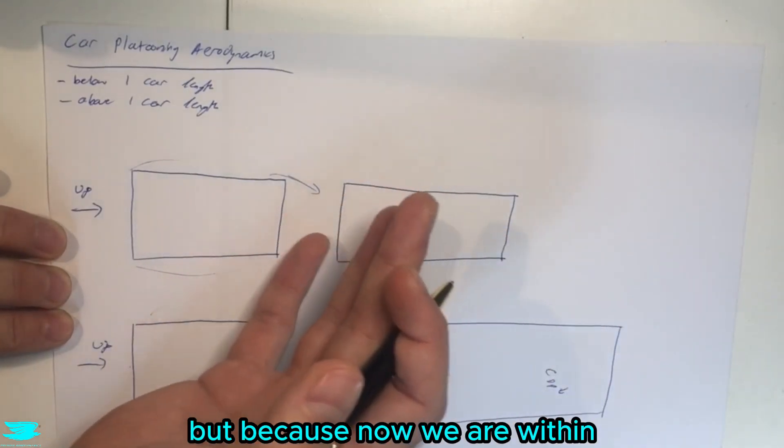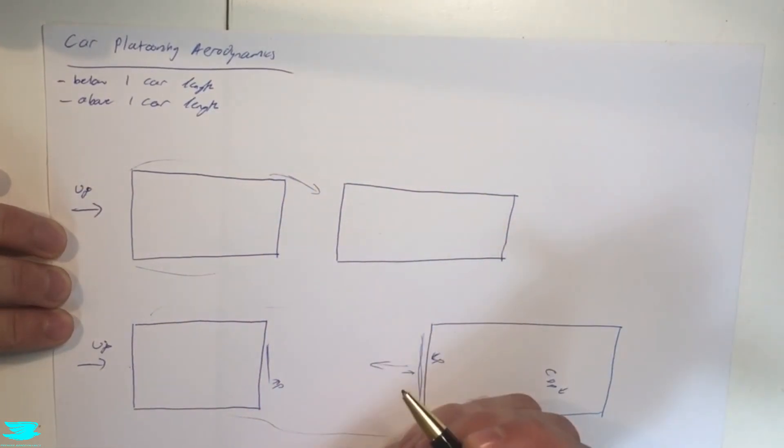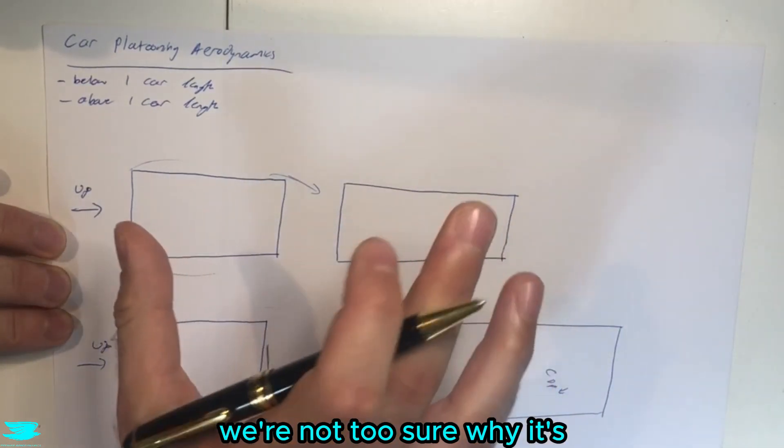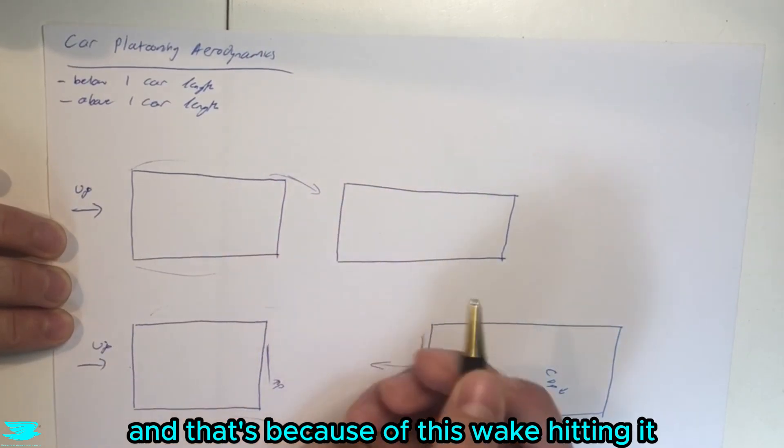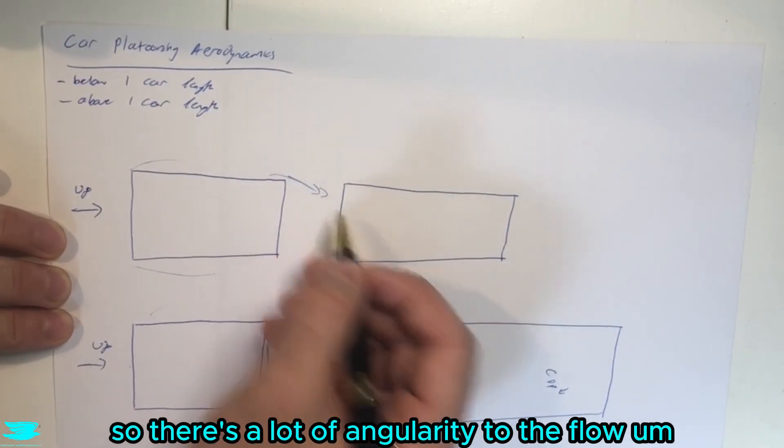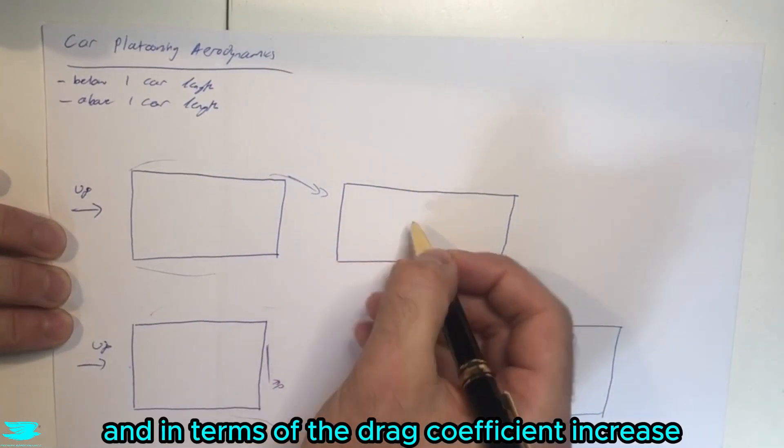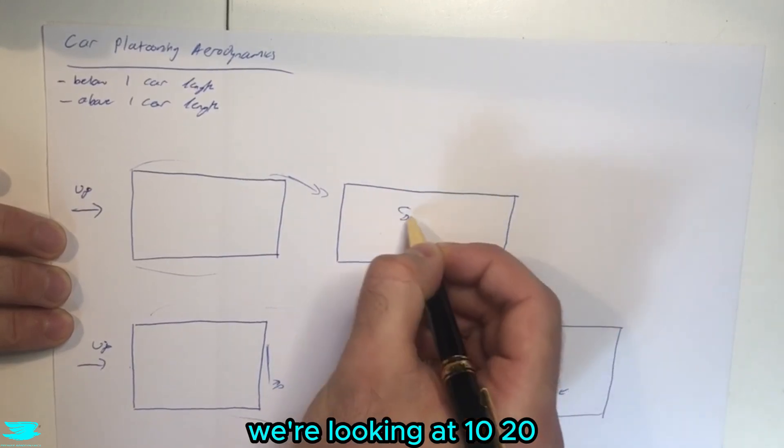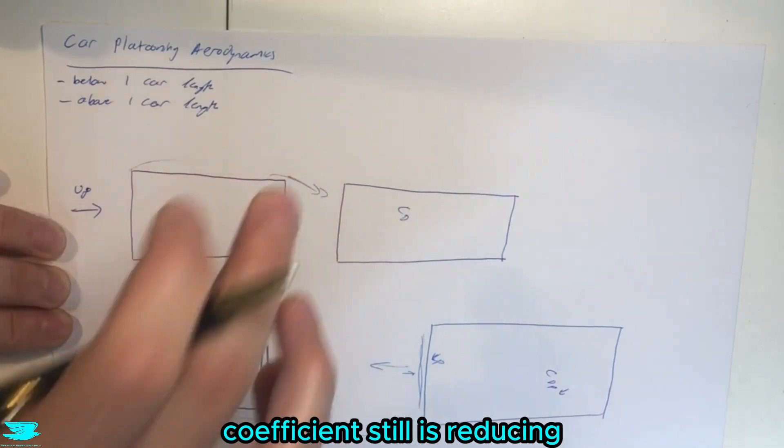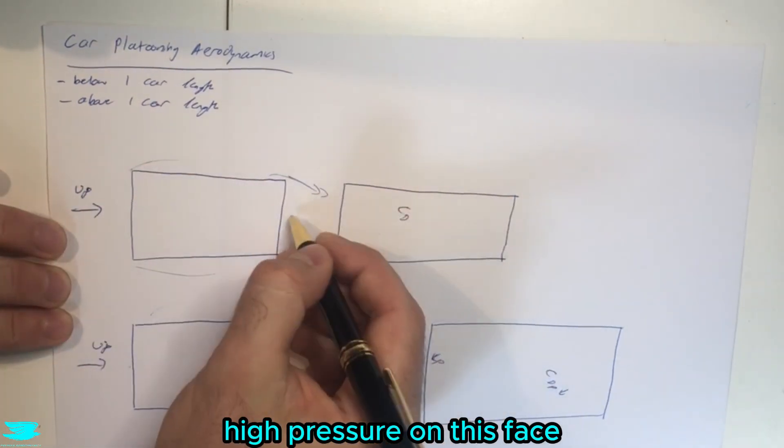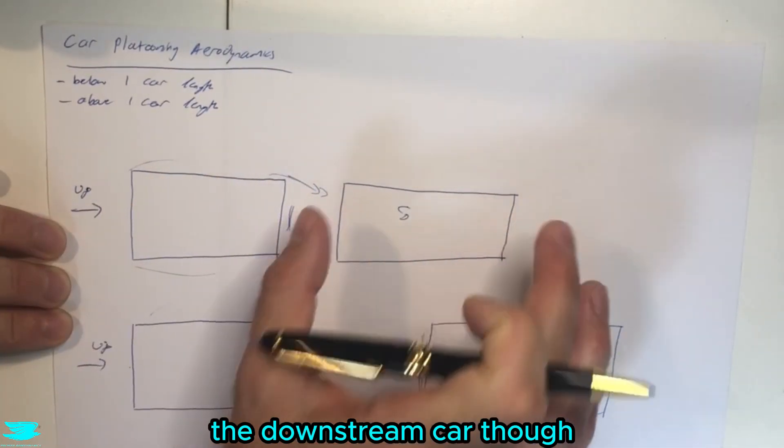But because now we are within one car length, the drag of this downstream car actually increases for some reason. And again, we're not too sure why, it's possibly just because the streamliners of the car just gets messed with. And that's because of this wake hitting it, and the flow is really being directed down. So there's a lot of angularity to the flow. But again, that's still not confirmed. And in terms of the drag coefficient increase, we're looking at 10, 20, even 30% increase for this car. The upstream car, on the other hand, its drag coefficient still is reducing, and that's because of this high pressure on this face still. So this upstream car is still performing as expected. The downstream car, though, the drag is increasing.